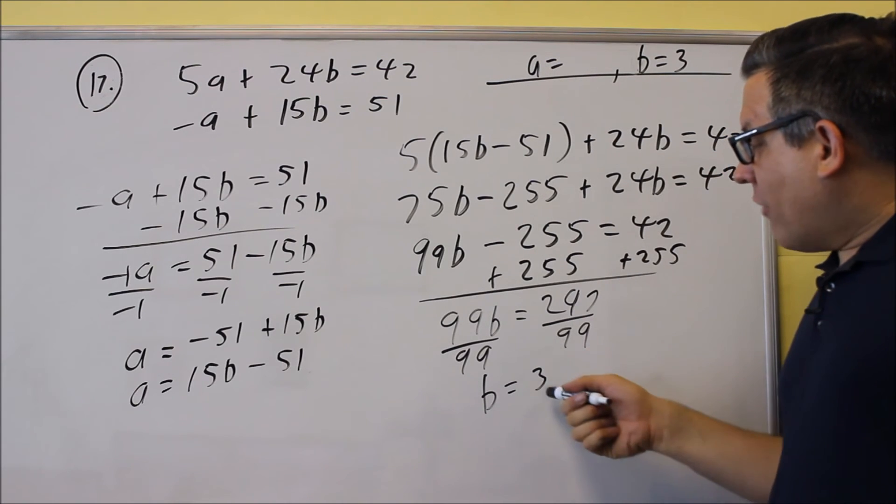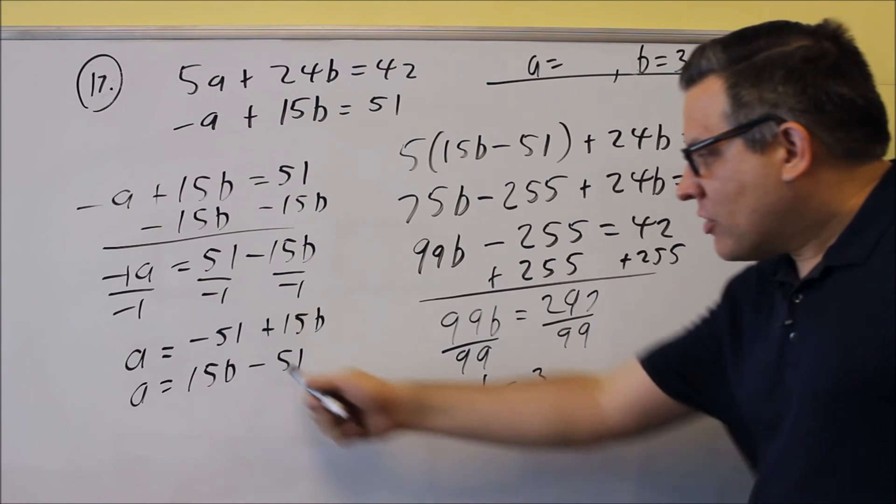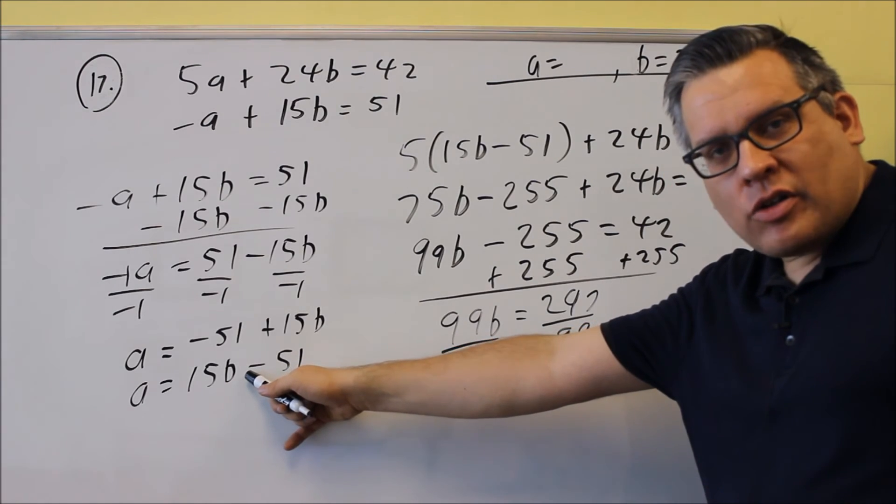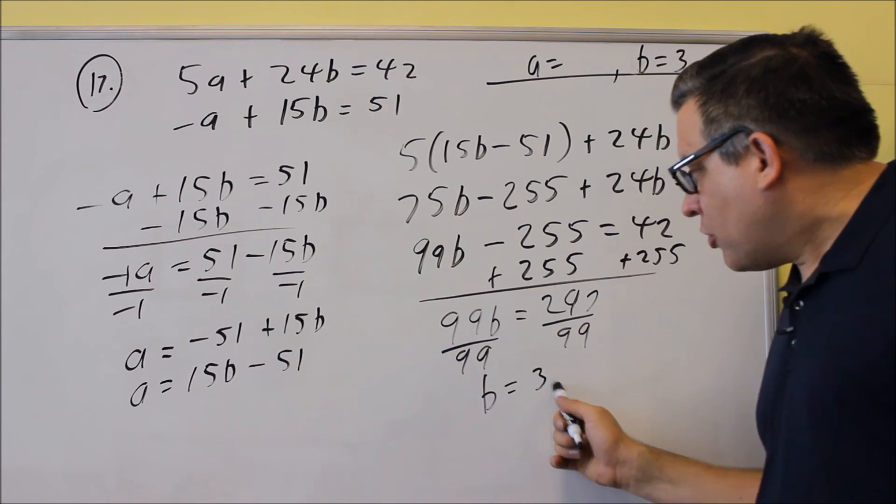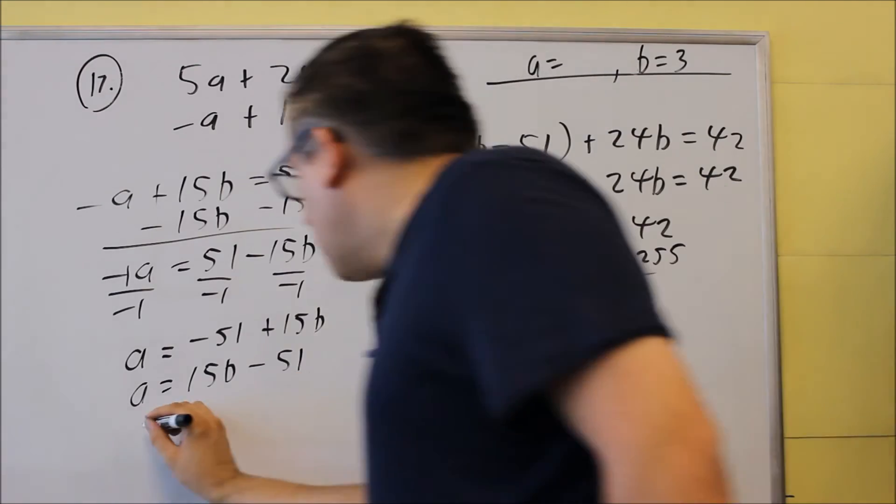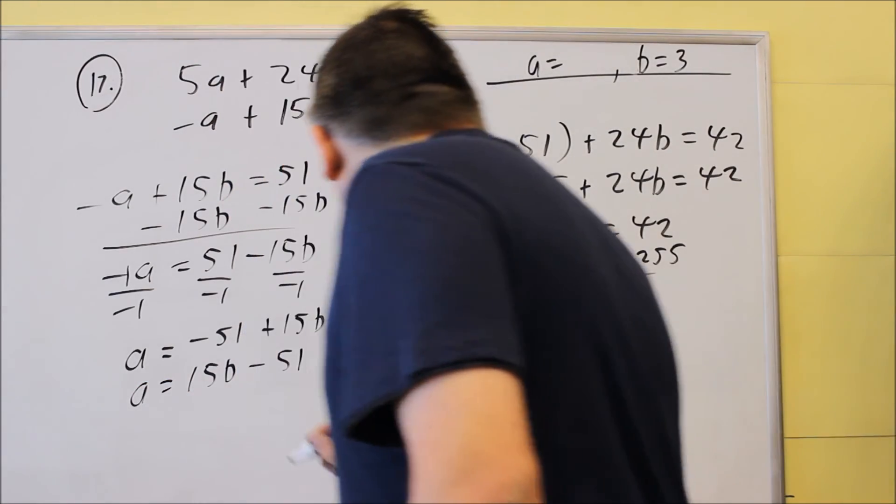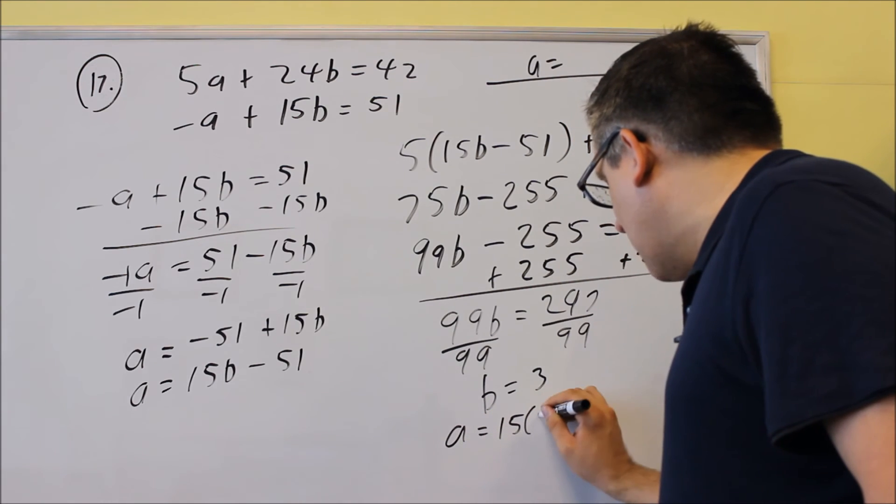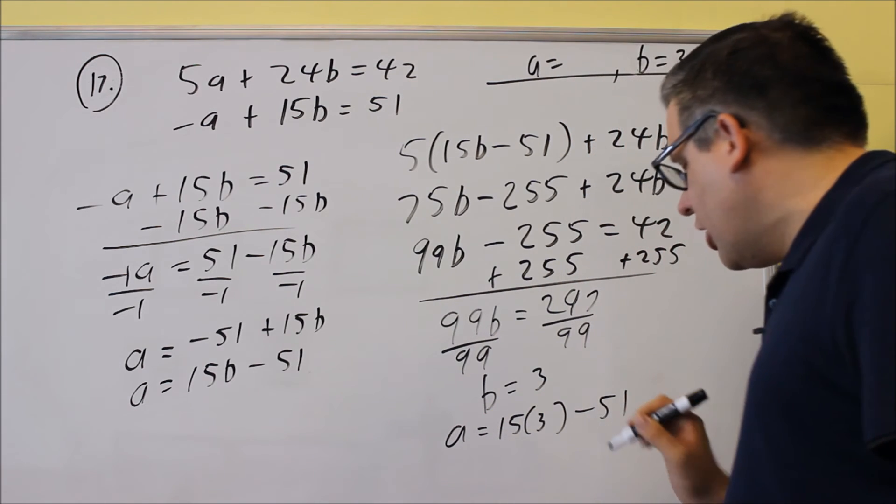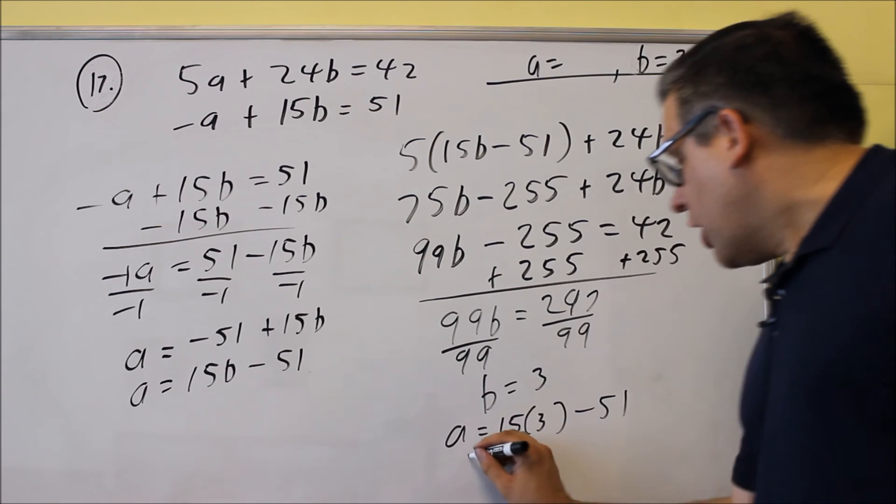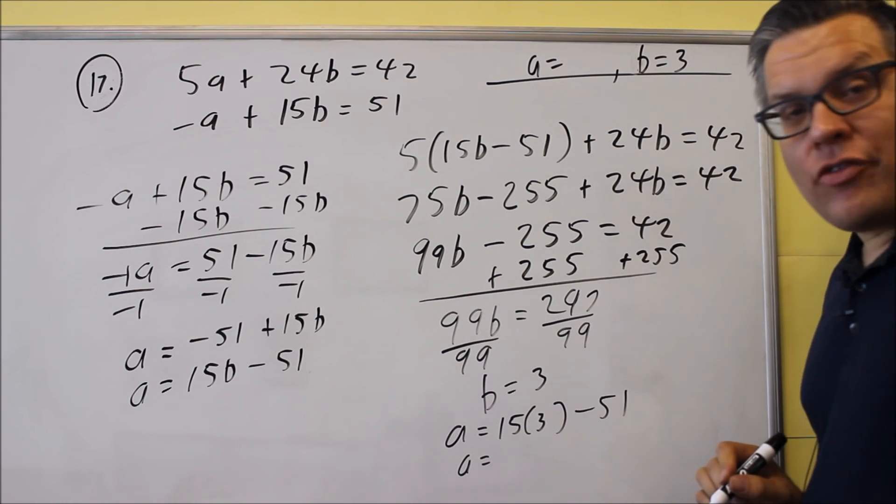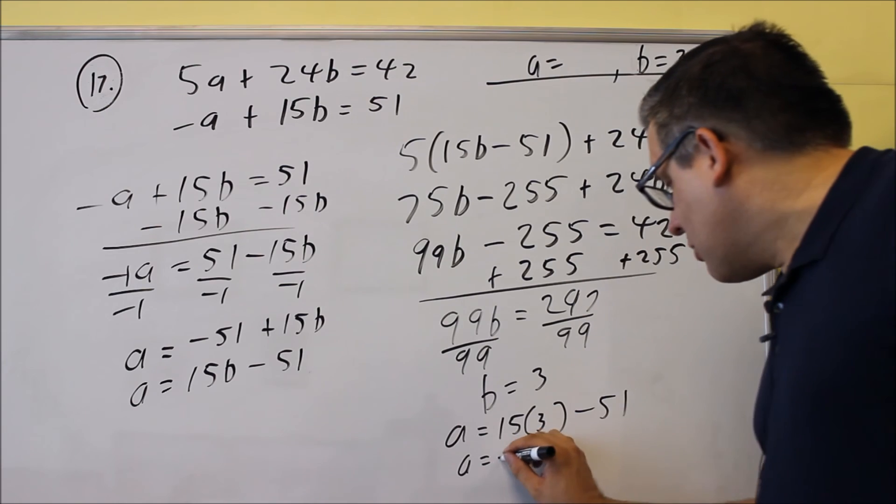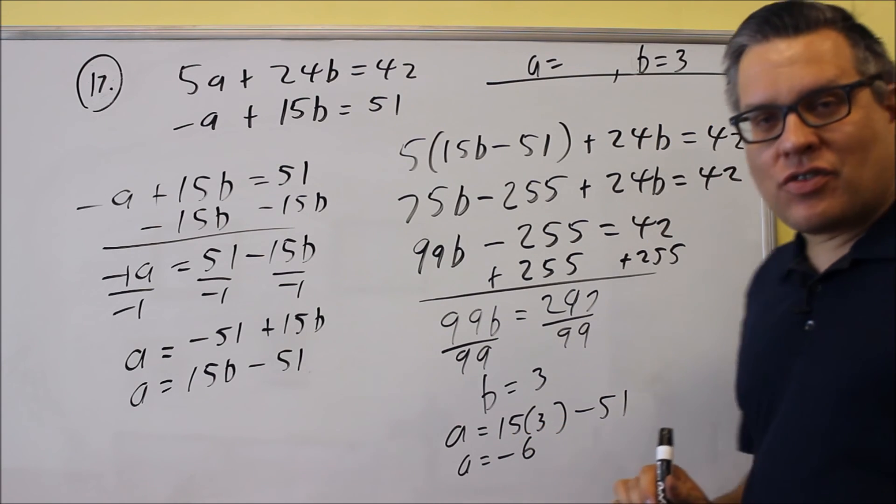Okay, so I have that answer. Now the easiest way to solve for a is to go back to the equation where a was always isolated. So I can just put 3 back into here. So using that same equation, I have a equals 15 times 3 minus 51. And then when I simplify that, I get 45 minus 51. And when I simplify that, I get negative 6.